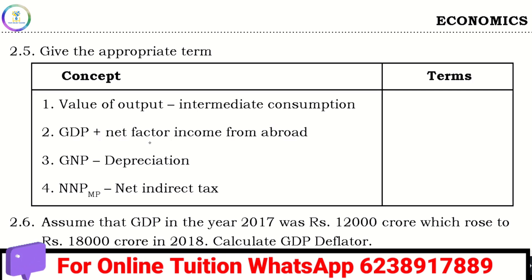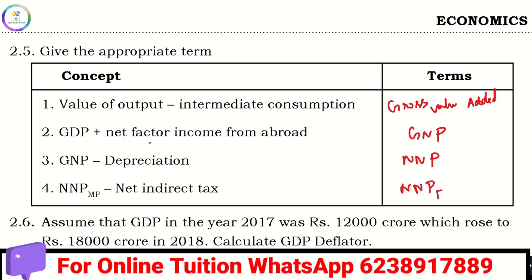In the value of output, what is the gross value added? GDP — what is the net factor from abroad adding? What is NNP? NNP at market price and NNP at factor cost.